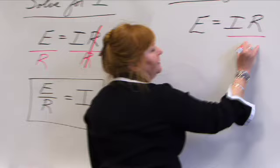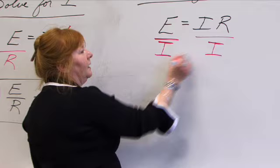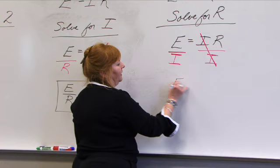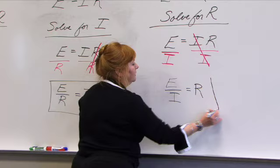The opposite operation is to divide. I'm going to divide this side by I. And what I do to one side, I must do to the other to keep it equal. This cancels and it shifts that relationship to the other side of the equation. So writing a nice clean form now, I have E divided by I, and that is equal to R.